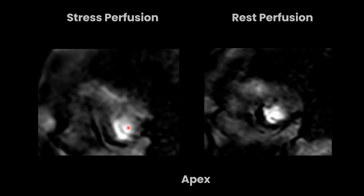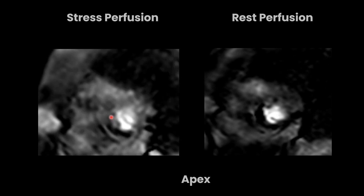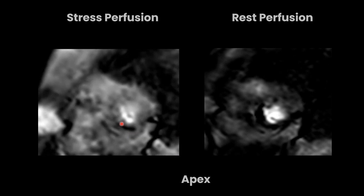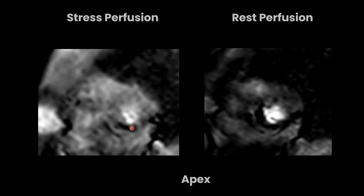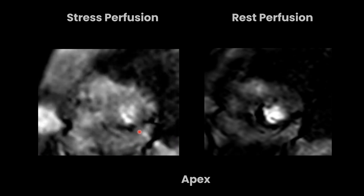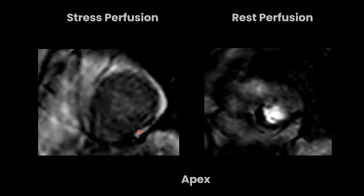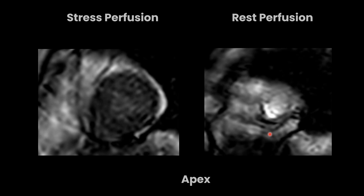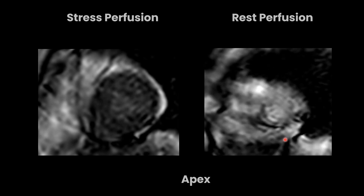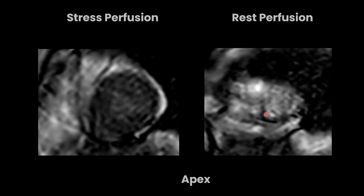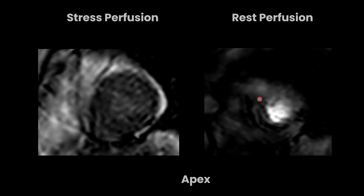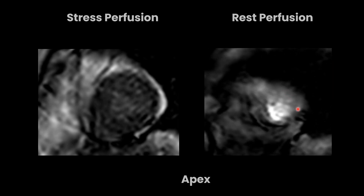After contrast enters the left ventricle lumen, the entire left ventricular myocardium is enhancing, but this inferior part of the heart muscle is not showing any enhancement — this is seen in stress perfusion. In rest perfusion, without any cardiac stress agent like adenosine or dobutamine, there is a perfusion defect seen in the apex when the rest of the myocardium is showing enhancement.